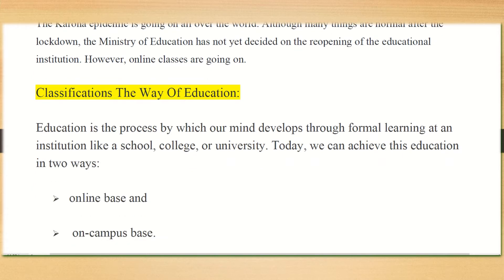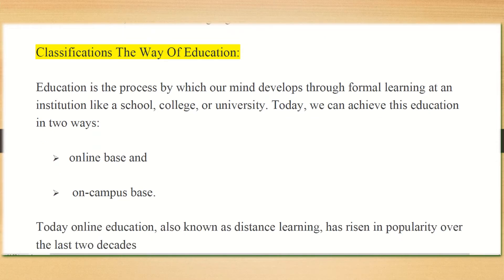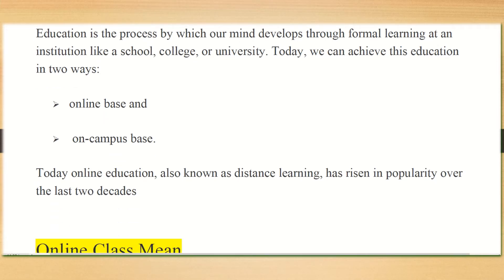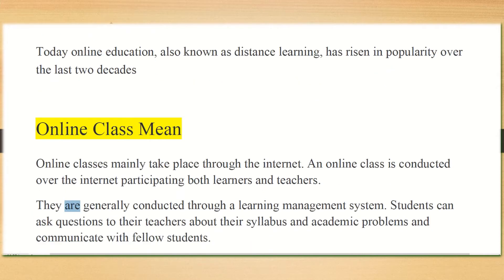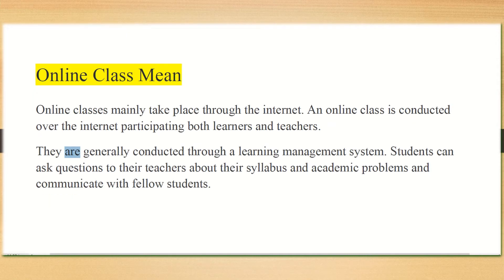Classification is the way of education. Education is the process by which our mind develops through formal language, formal learning at an institution like a school, college or university. Today, we can achieve education in two ways: online-based and on-campus-based. Online education, also known as distance learning, has risen in popularity over the last two decades. Online class means classes that mainly take place through the internet.